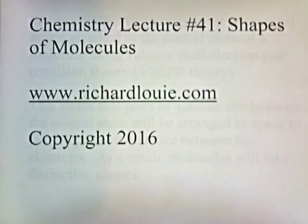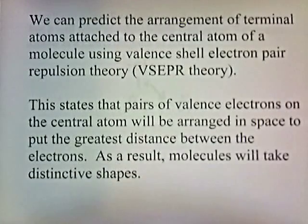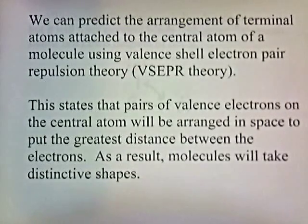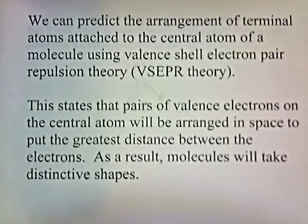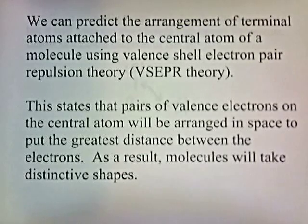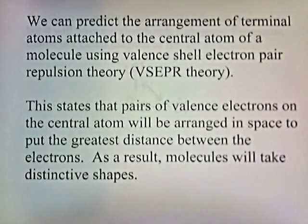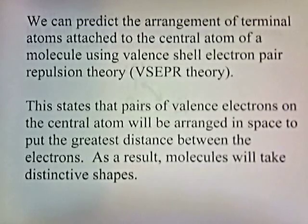Chemistry Lecture Number 41: Shapes of Molecules. We can predict the arrangement of terminal atoms attached to the central atom of a molecule using valence shell electron pair repulsion theory, or VSEPR theory. This states that pairs of valence electrons on the central atom will be arranged in space to put the greatest distance between the electrons. As a result, molecules will take distinctive shapes.